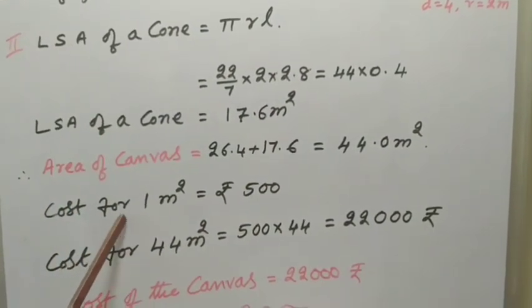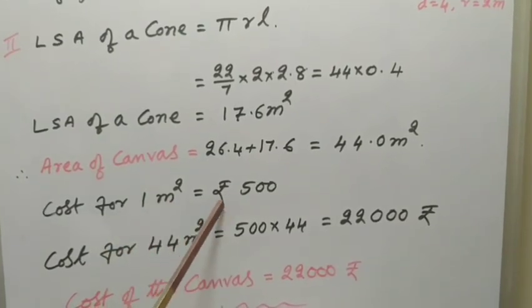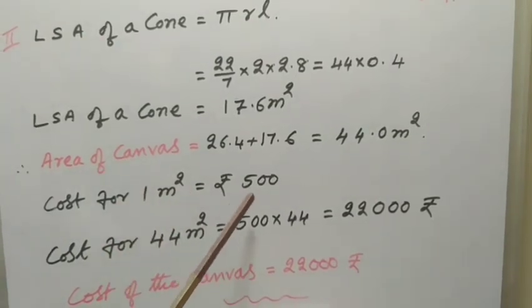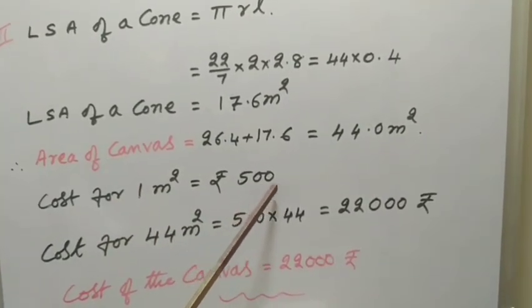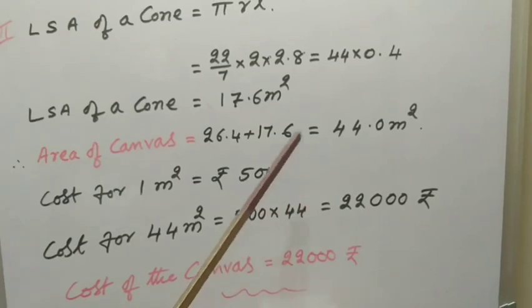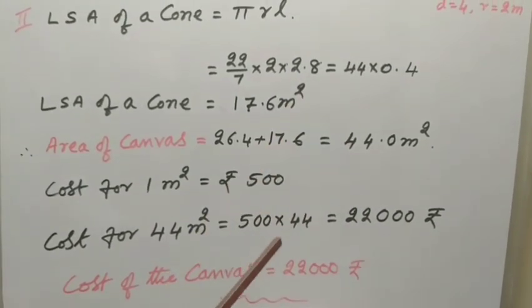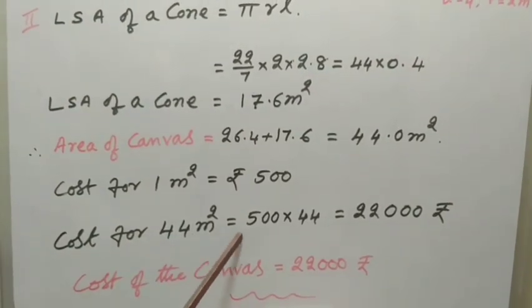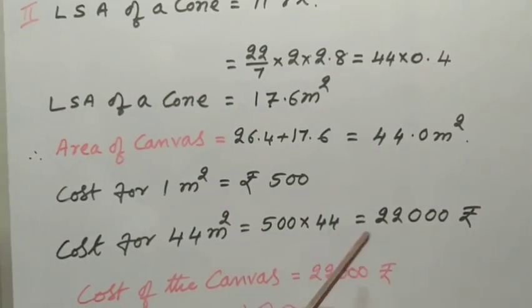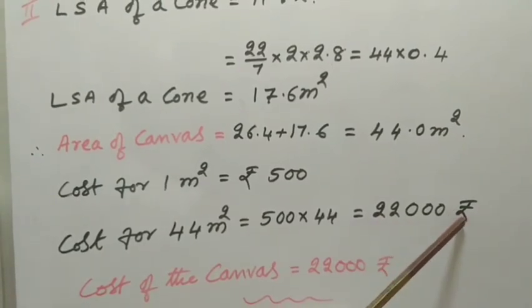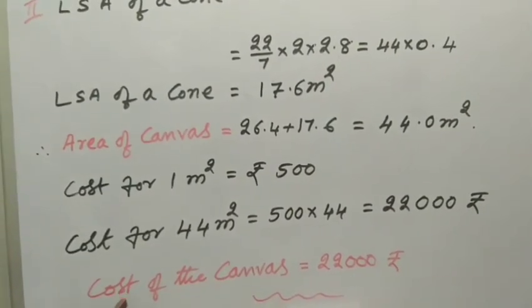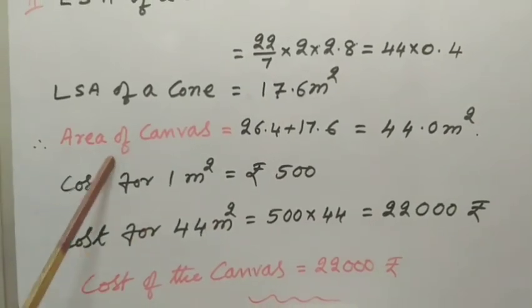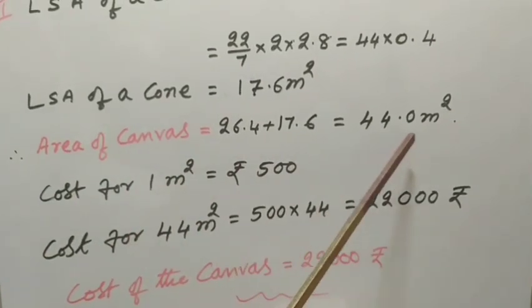You can add these two in margin, you will get 44.0 meters square. Now, it is given that cost for 1 meter square equal to rupees 500. For 44 meter square means 44 times, that means we have to multiply. Cost for 44 meter square equal to 500 into 44, that is equal to 22,000 rupees. Therefore, we calculated cost of the canvas 22,000 and area of the canvas 44 meters square.